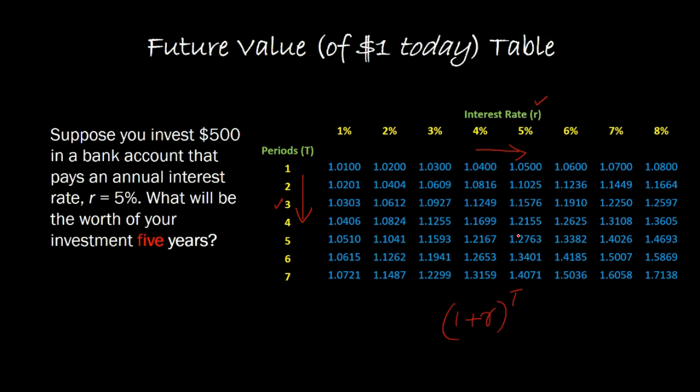For example, this value here corresponds to an interest rate of 4% and t equals 5. How this value came up is that you went into the future value interest factor formula, which is 1 plus r raised to the power t,